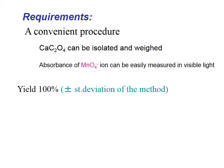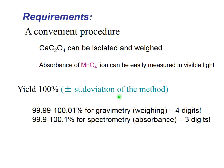An important requirement is that I need a yield of 100% plus or minus the standard deviation of the method. Very seldom in synthetic chemistry do we have 100% yields — that's why analytical reactions are very special. They are designed for the purpose of achieving 100% yield.